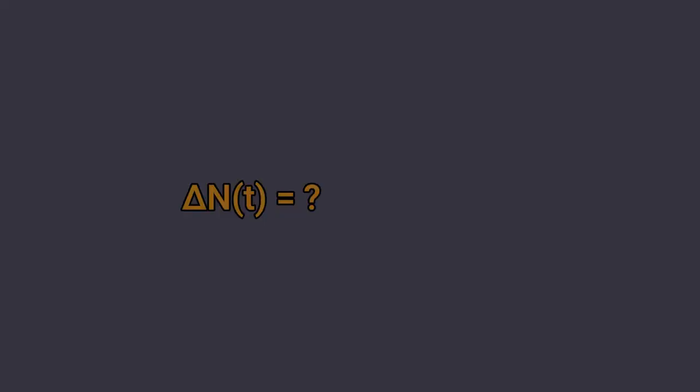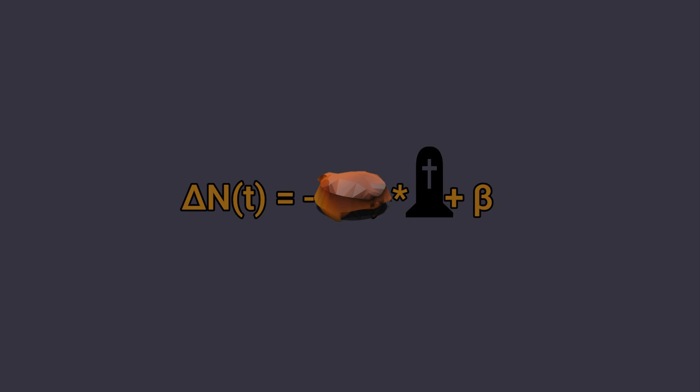Now I complicate the behavior a bit. In nature animals die but also reproduce. To start accounting for this behavior I implement a birth chance. At a given time there is a 2% probability that a Wilpu is created out of nothing. I know this is not realistic but in future episodes I will fix this. Now the equation of the increment becomes minus the population at time t multiplied by the death chance, plus the birth chance. What do you think will happen in this case?